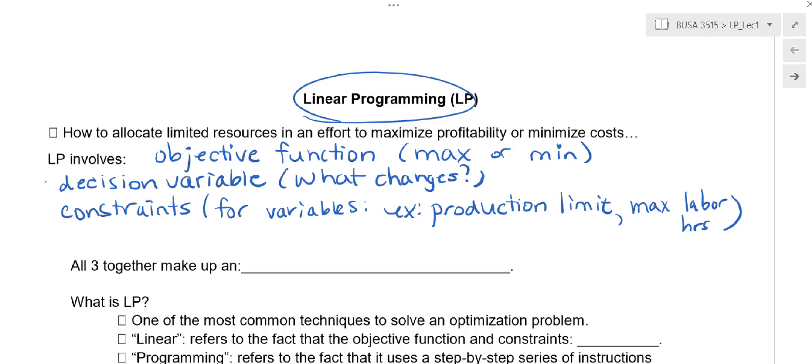All three of these pieces then, the objective function, the decision variables and the constraints, all together make up what we call an optimization problem. And we're going to use the linear programming method on them.